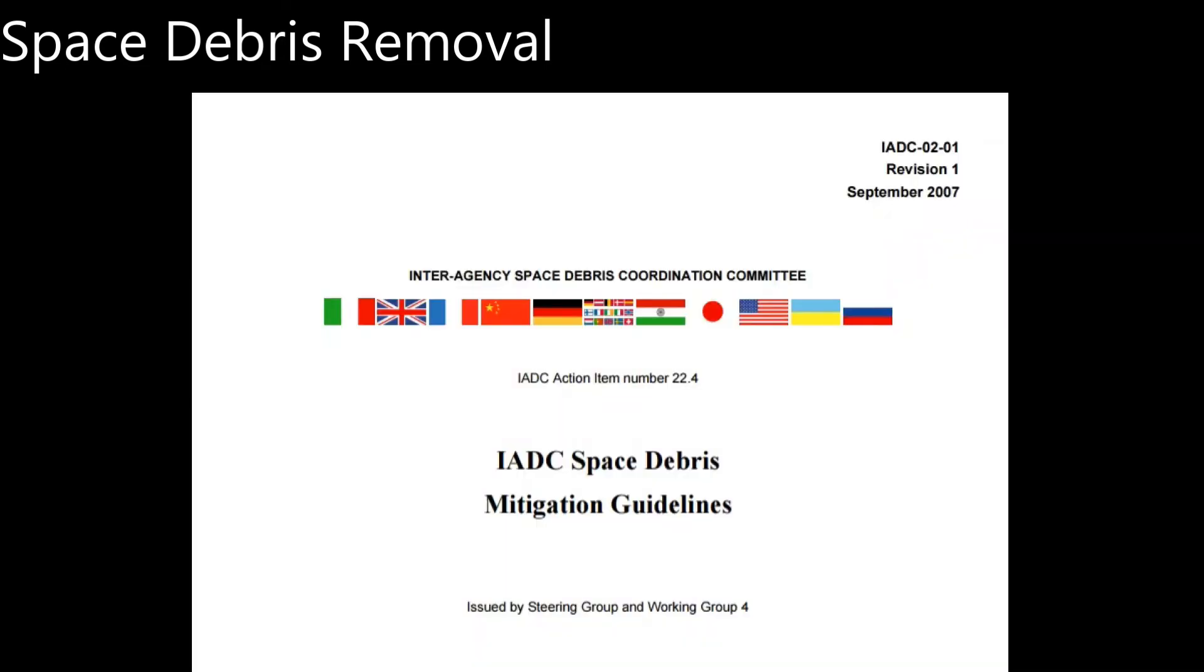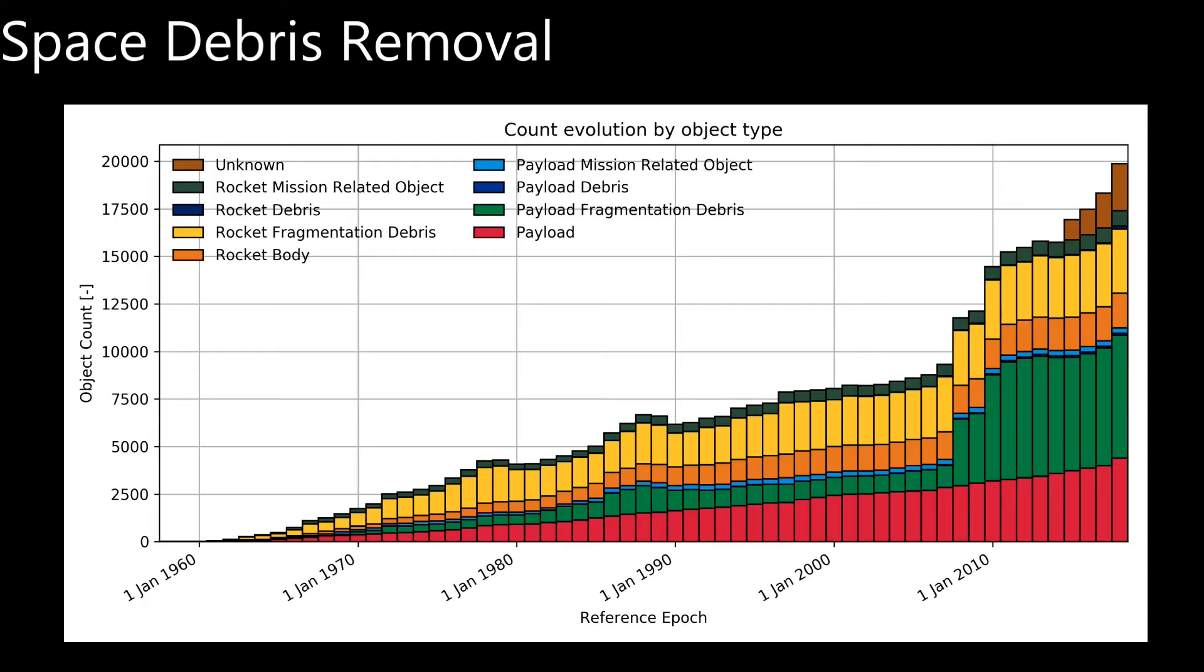Finally, we need to remove the existing debris that is not going to deorbit soon itself. Current guidelines require that post-mission orbital lifetime of objects should be limited to 25 years, which is what has been dubbed the 25-year rule. However, research has shown that without removing the existing debris, it will go towards a point of no return.